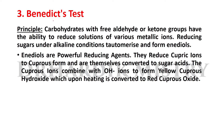Benedict Test. Principle: Carbohydrates with free aldehyde or ketone groups have the ability to reduce solutions of various metallic ions. Reducing sugars under alkaline conditions tautomerize and form enediols, which are powerful reducing agents. They reduce cupric ions to cuprous form and are themselves converted to sugar acids. The cuprous ions combine with OH⁻ ions to form yellow cuprous hydroxide, which upon heating is converted to red cuprous oxide. That is the principle of Benedict test.